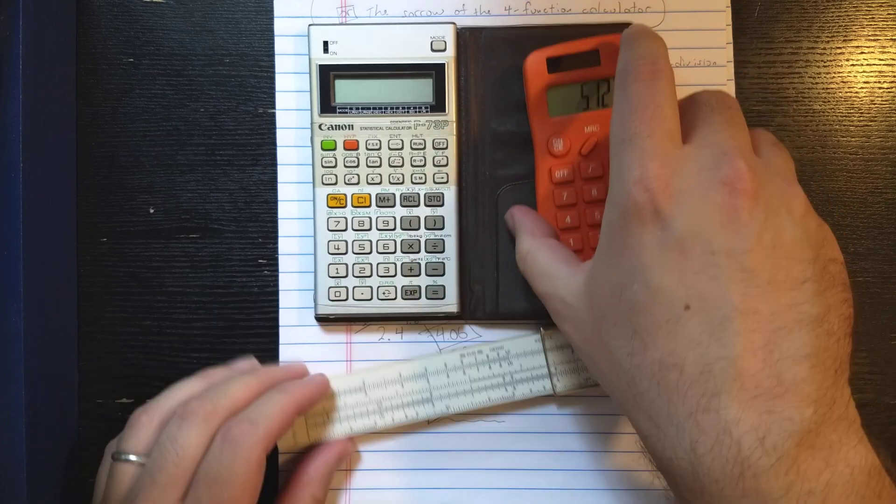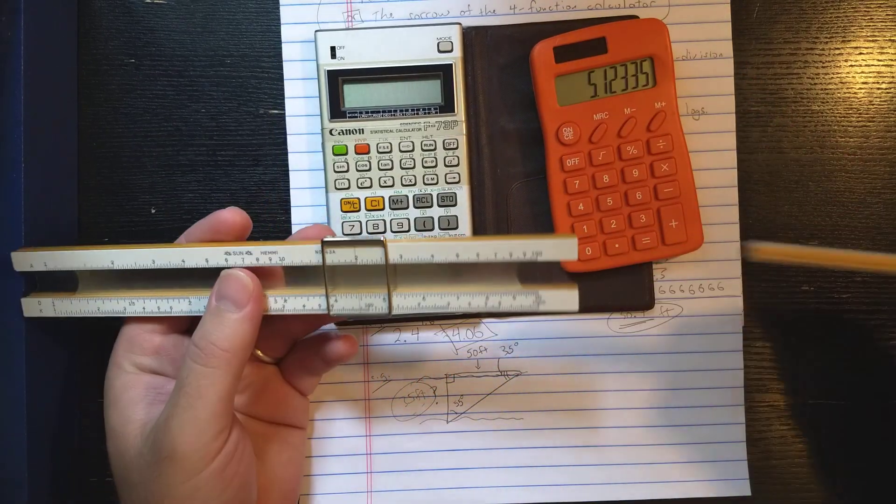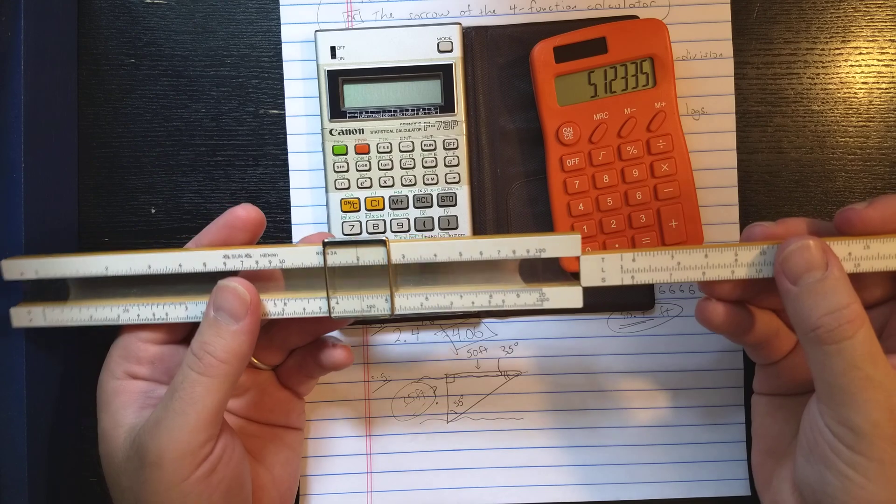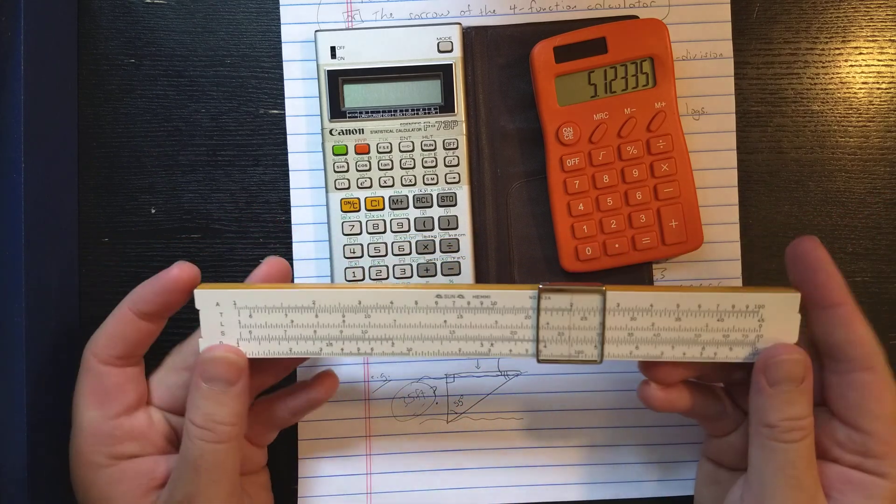But the slide rule makes it simple, right? It's just another scale, right? I can invert it by doing it backwards, just like I do on any of the other scales, right?